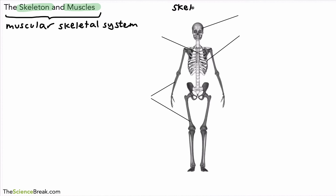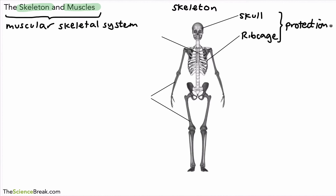Let's label the skeleton. Right at the top of the skeleton is the skull, and another part to focus on is the rib cage, which is made up of all your ribs. These two have a similar job — they are both there for protection. The skull is there to protect the brain, which is very delicate, and the rib cage protects the lungs and the heart.